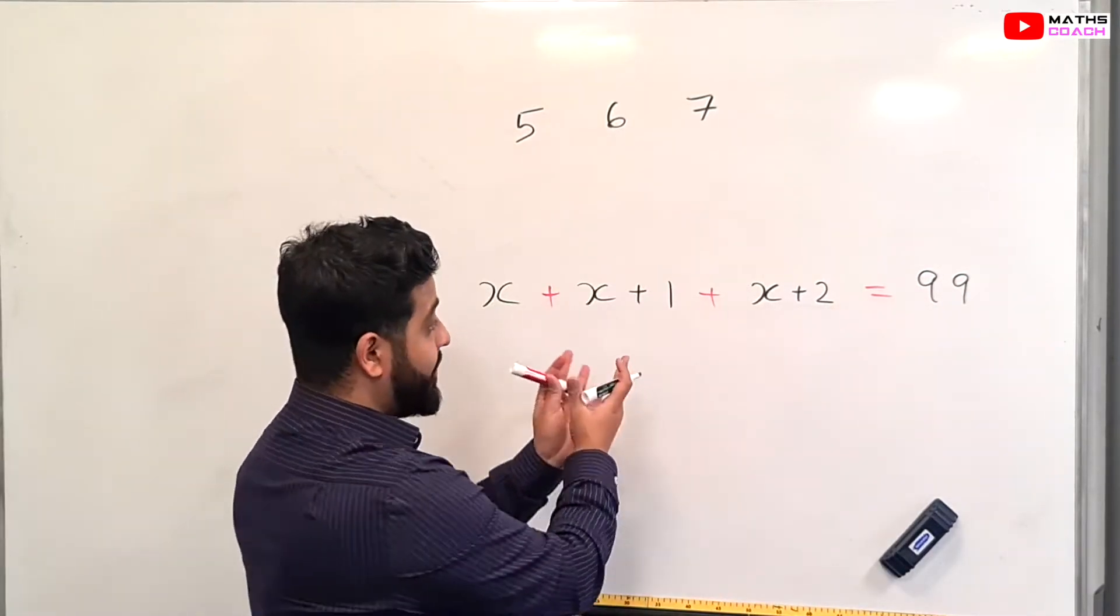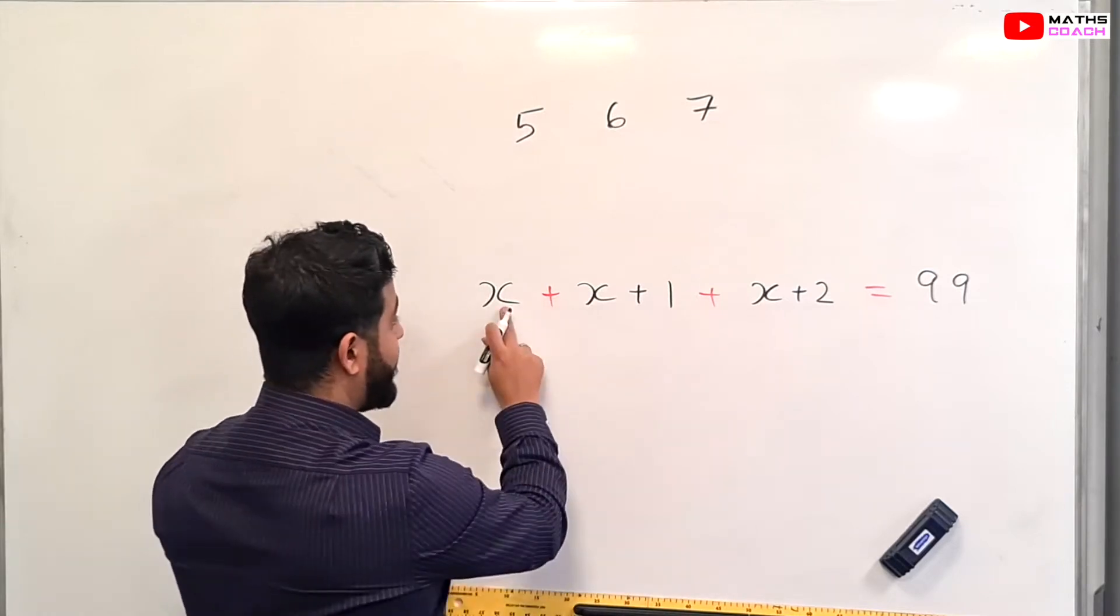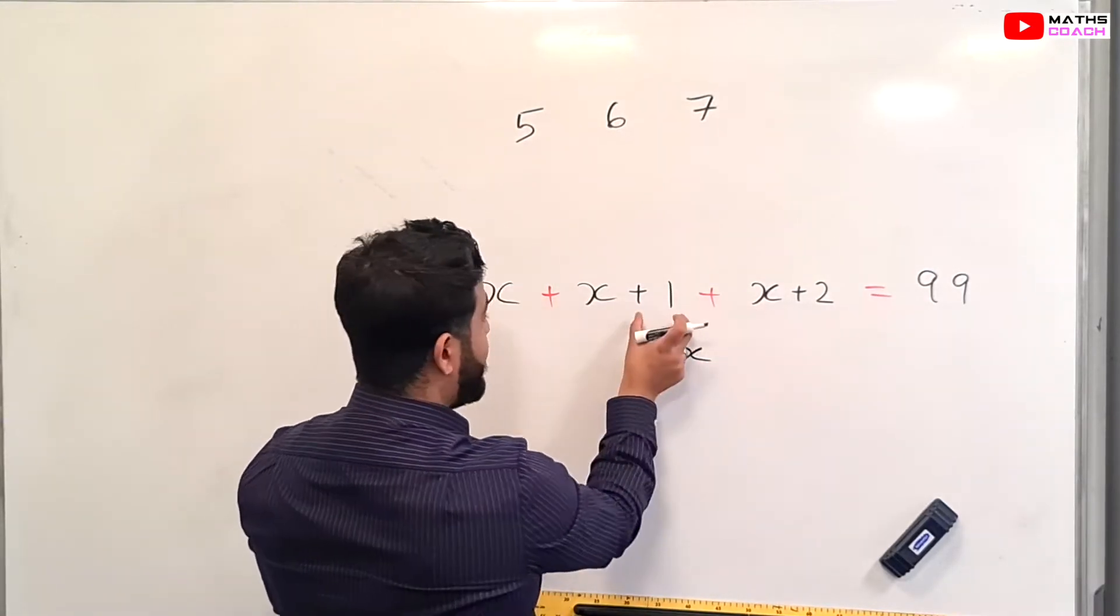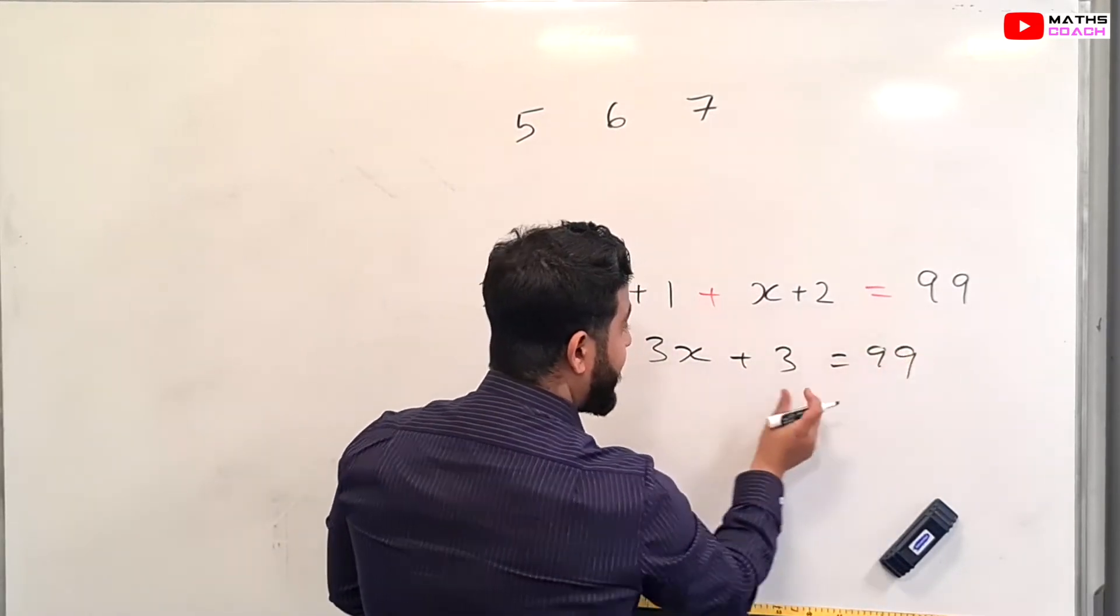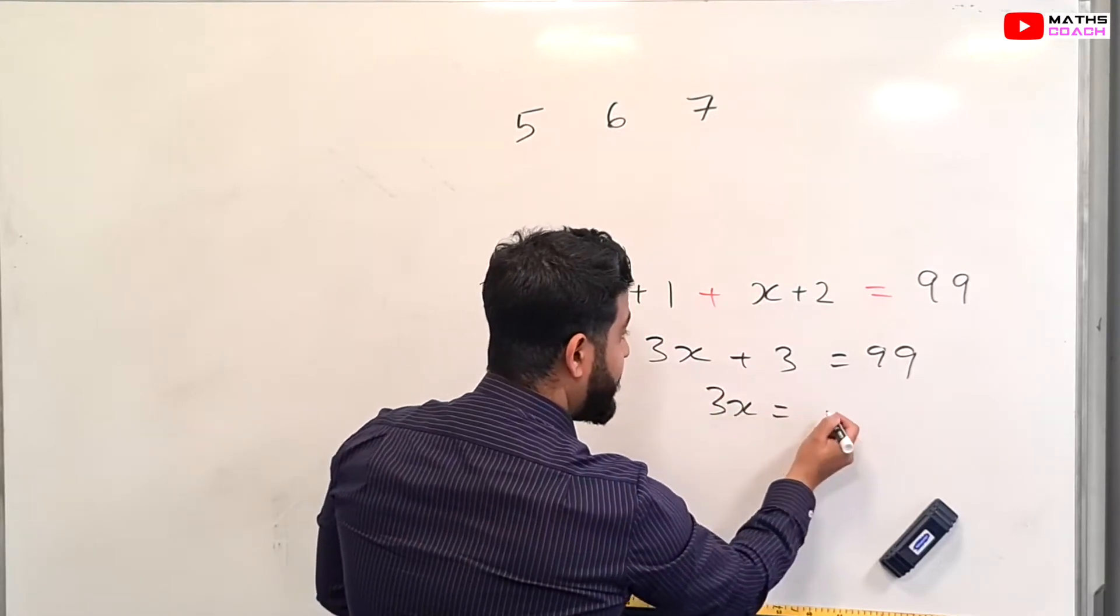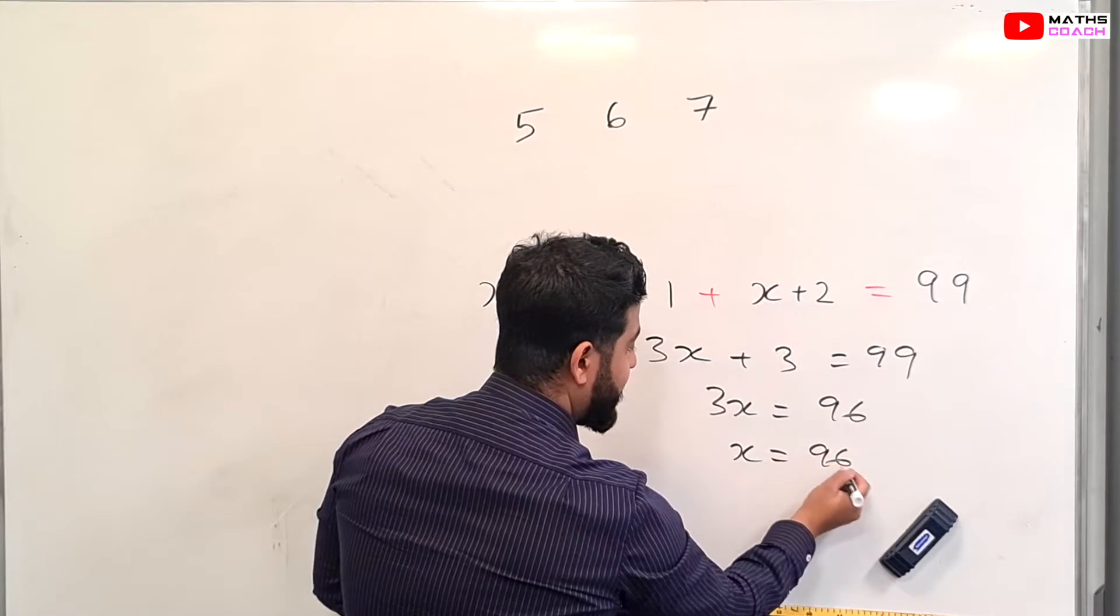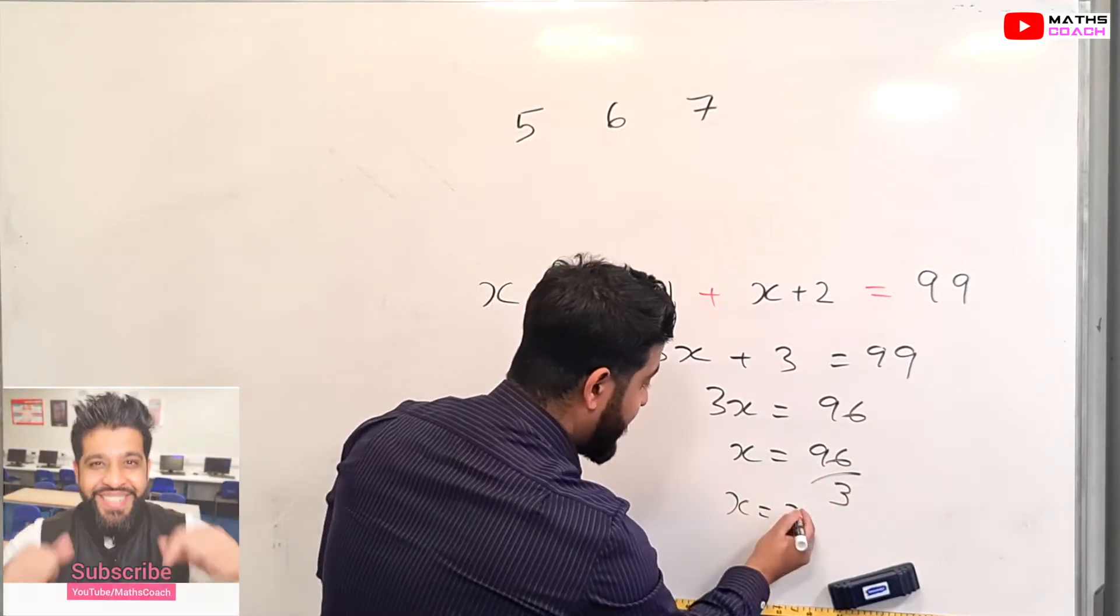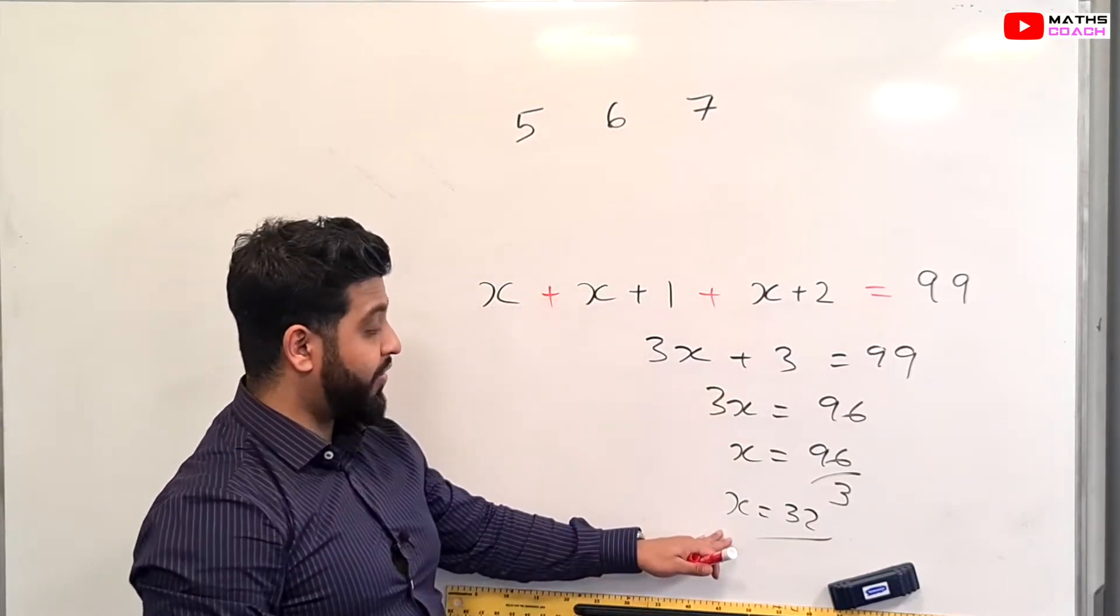So now we have an equation where we collect the like terms and solve this. So we have X plus X plus X, which is 3X. We have 1 plus 2, which is 3, and that equals 99. We take the 3 to the other side, so 3X equals 96. Therefore, X would equal 96 divided by 3, which gives us 32. So our answer for X is 32.